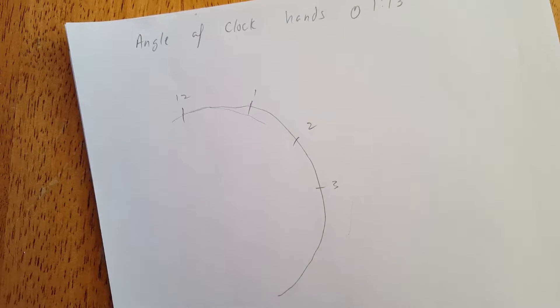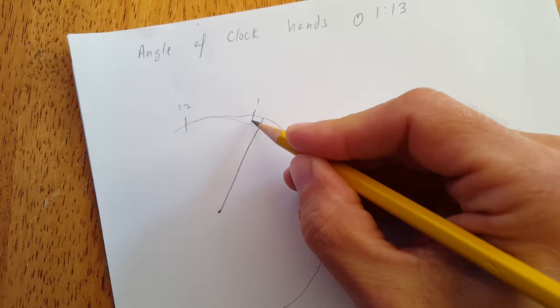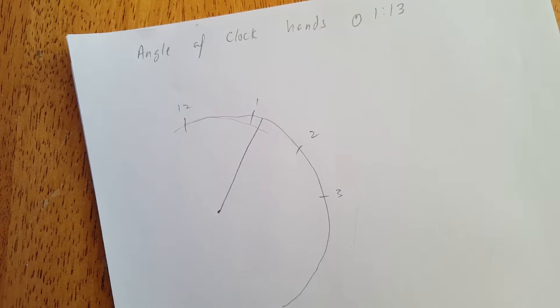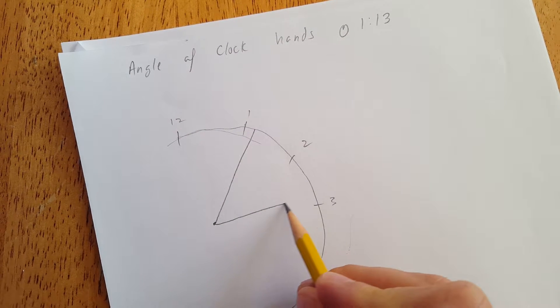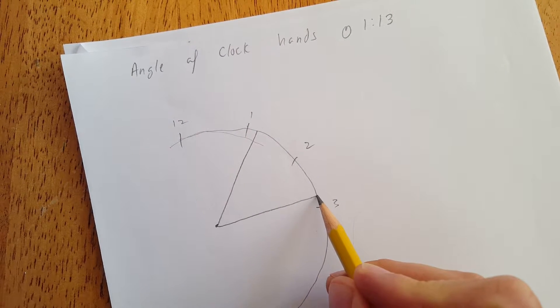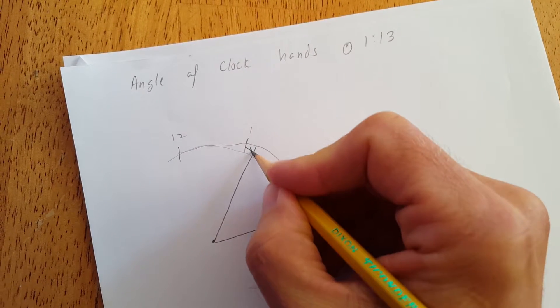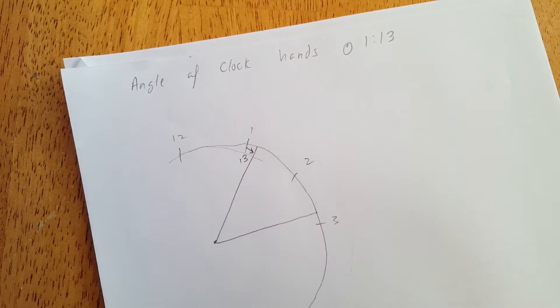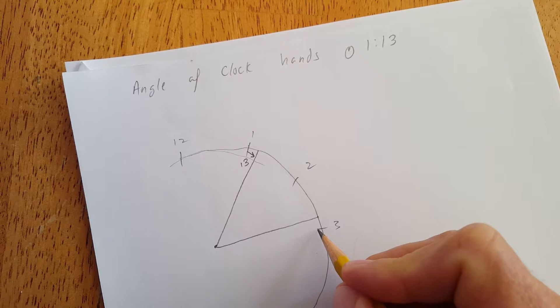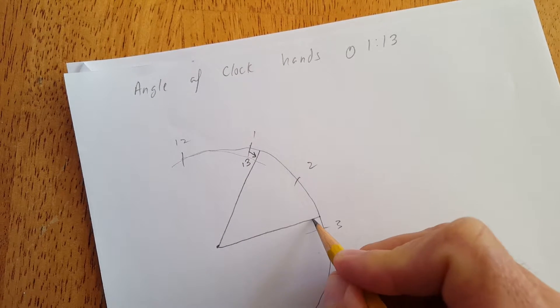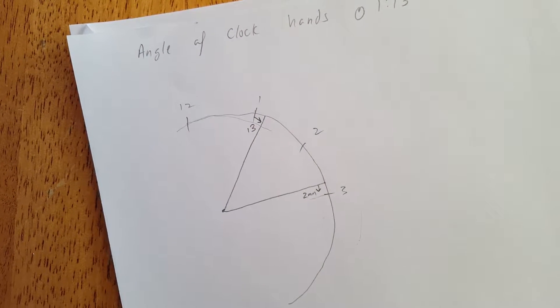But at 1:13 there's going to be a hand here, right? So this is the hour hand. It has to move a little bit off one and the minute hand is going to be close to, pretty close to the 15 spot but it's going to be a little bit off. So I draw a little picture here and say okay, this hour hand had to move 13 minutes and this minute hand has got two more minutes to go. There's multiple ways to do this problem but this is the way I set it up.